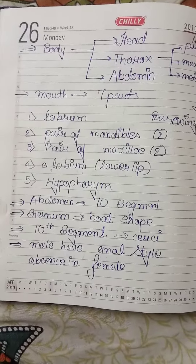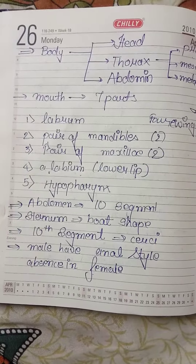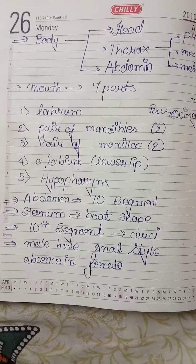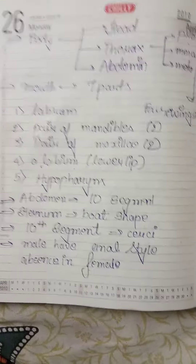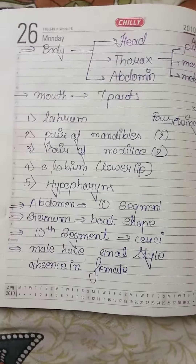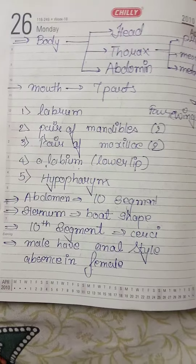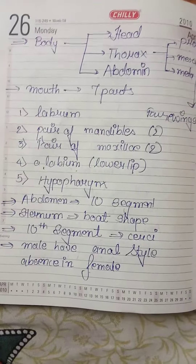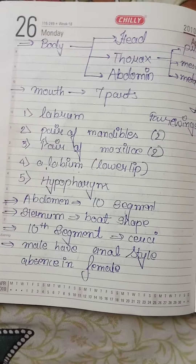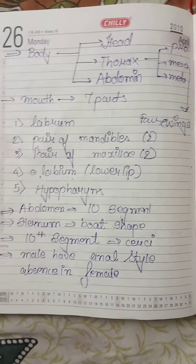Abdomen has 10 segments and sternum is boat-shaped at 10 segments in both male and female cockroach. Cerci are the appendages. Male have anal style at the 10th segment, which is absent in female.